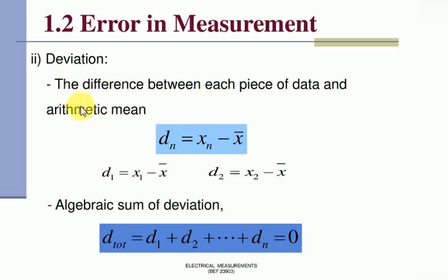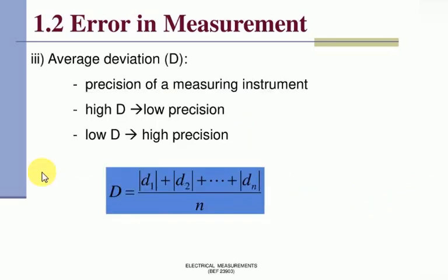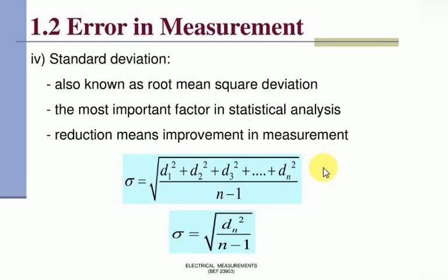What is average deviation? Precision of measured instrument. High deviation means low precision and low deviation means high precision. If we do the average of deviation, then average deviation takes place.